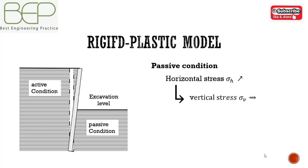The shear stress, which is approximately horizontal stress minus vertical stress divided by two, changes. And finally, when the applied shear stress reaches the ambient shear strength, a ground failure occurs.